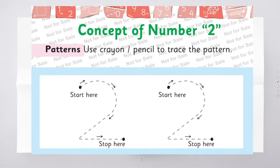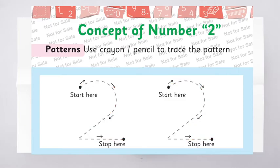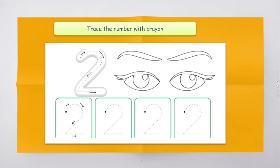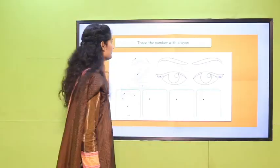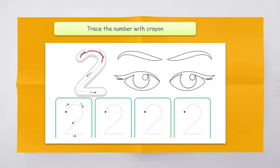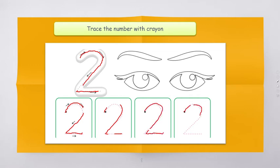So here is the tracing of number two. How are we going to trace it? We are going to do an upward curve, come down slant and go back straight. We have a pair of eyes here — count your eyes: one and two. Trace it again: upward curve, come down slant and go back straight. Excellent. Again, use your finger and try to trace the two on the screen. Two. Two. Two. And in the last — two.